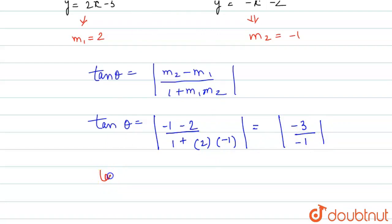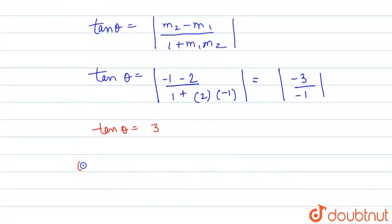So therefore, tan theta is equal to the mod of minus 3 over minus 1, which equals 3. Therefore, the angle between these lines is theta equals tan inverse 3. Thank you.